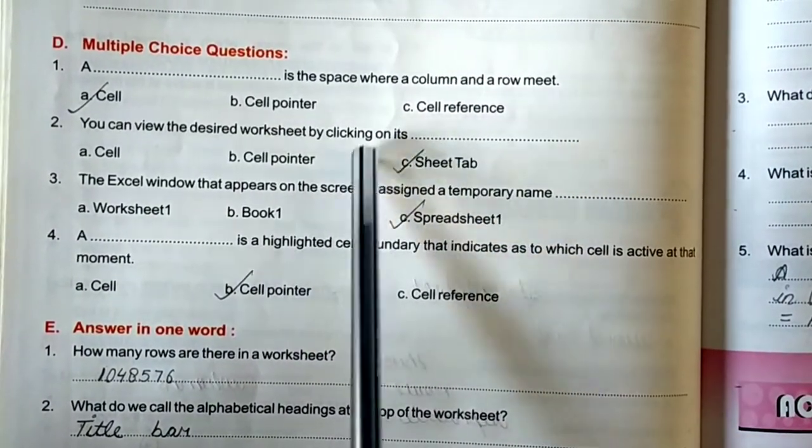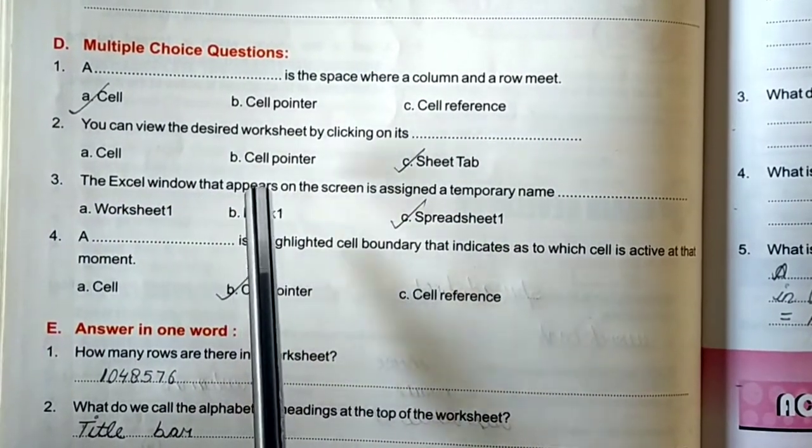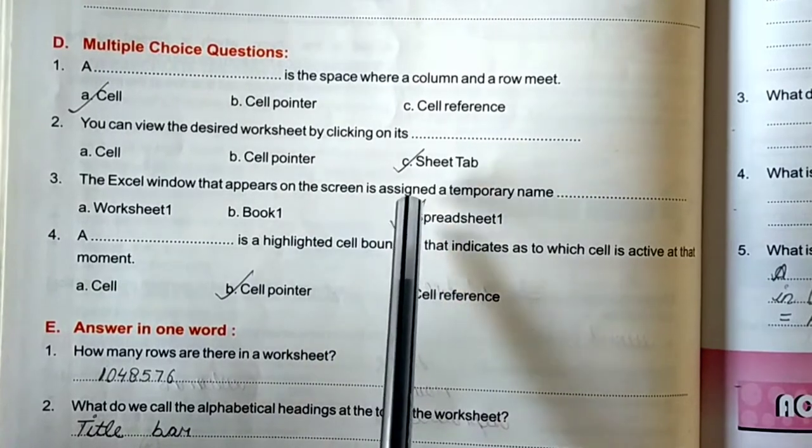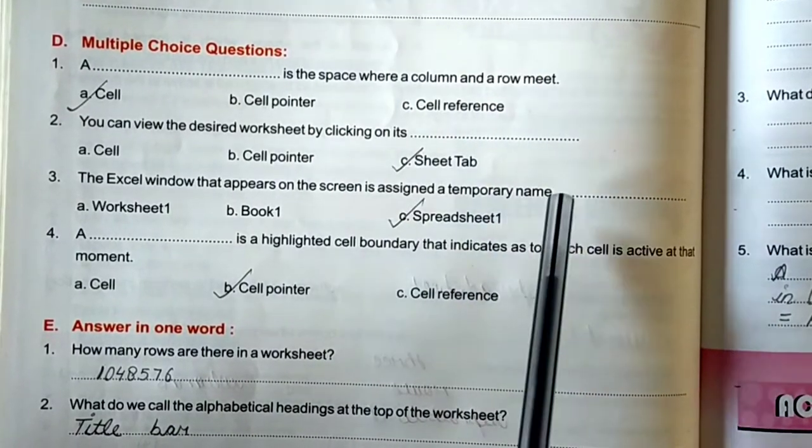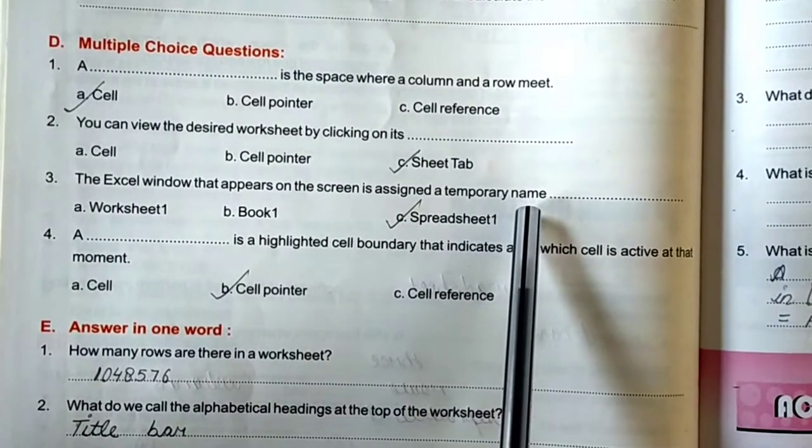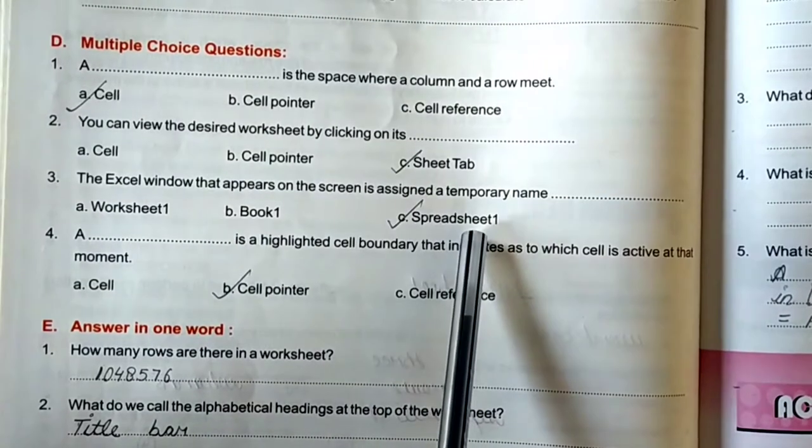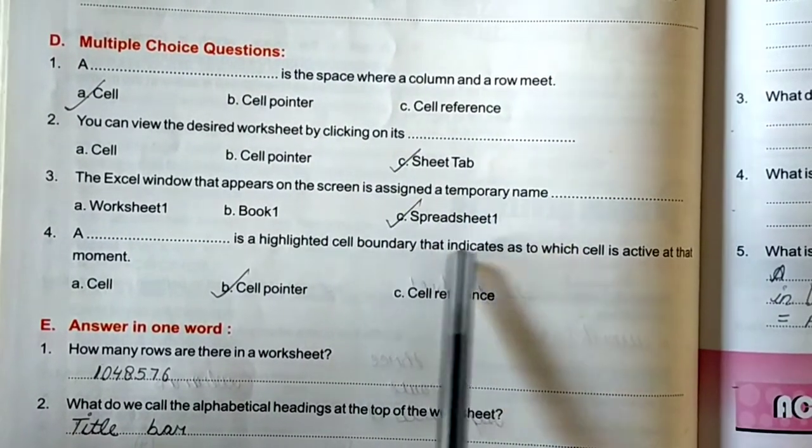Third, the Excel window that appears on the screen is assigned a temporary name. Worksheet 1, Book 1, or Spreadsheet 1. That is spreadsheet 1. C option is correct.